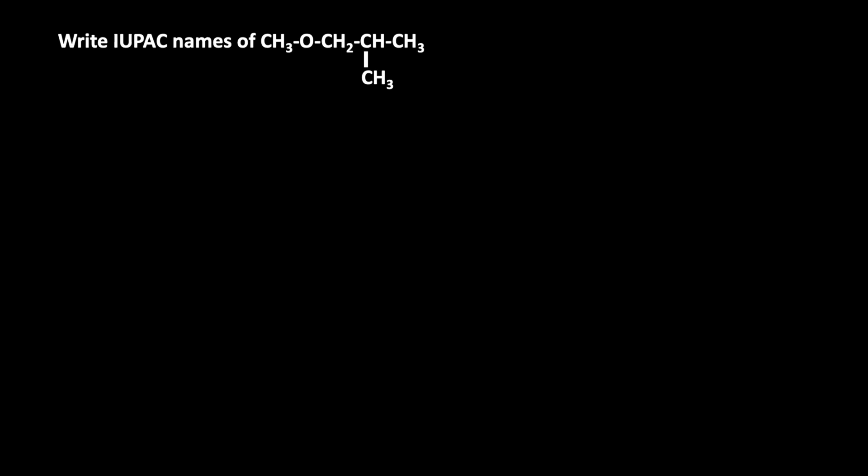Here, CH3O-CH2-CH(CH3)-CH3 is an ether. As per the IUPAC rule, this ether is considered as an alkoxy alkane. The alkoxy is the group which contains the lesser number of alkyl carbons, and the alkane is derived from the longest alkyl group.